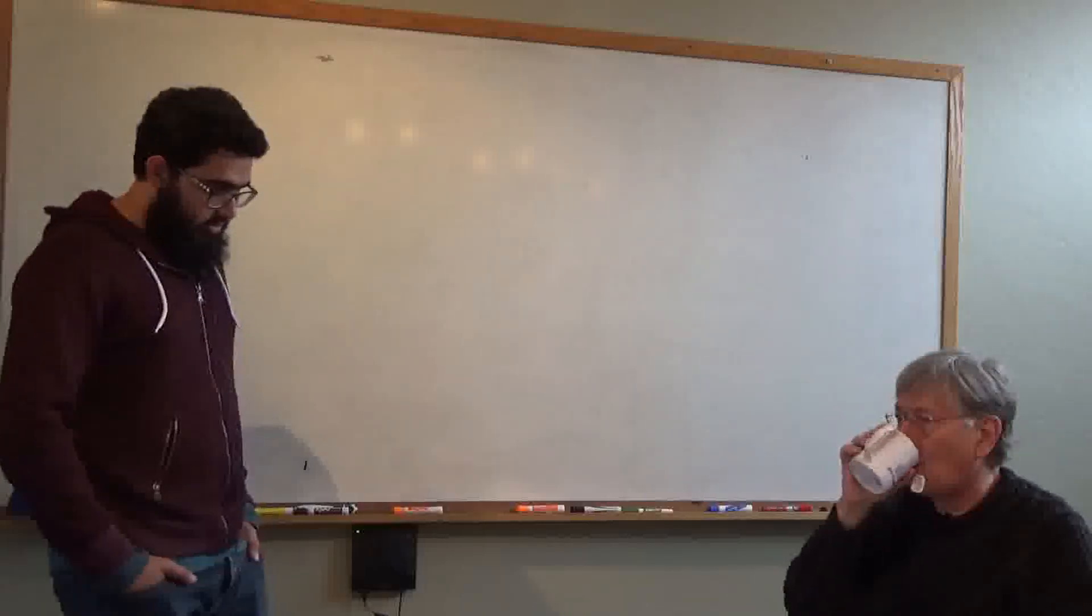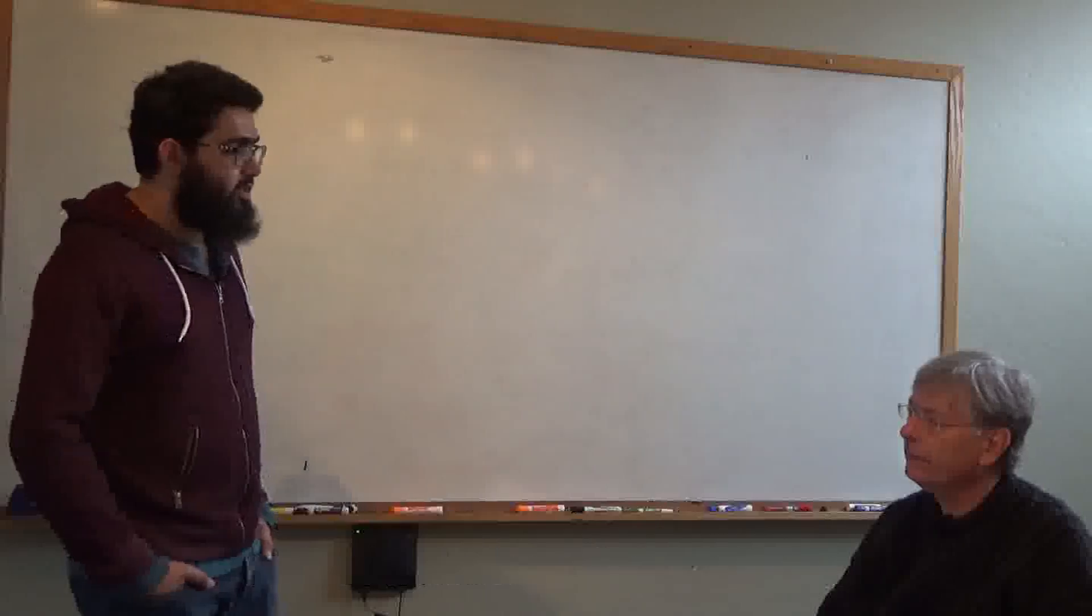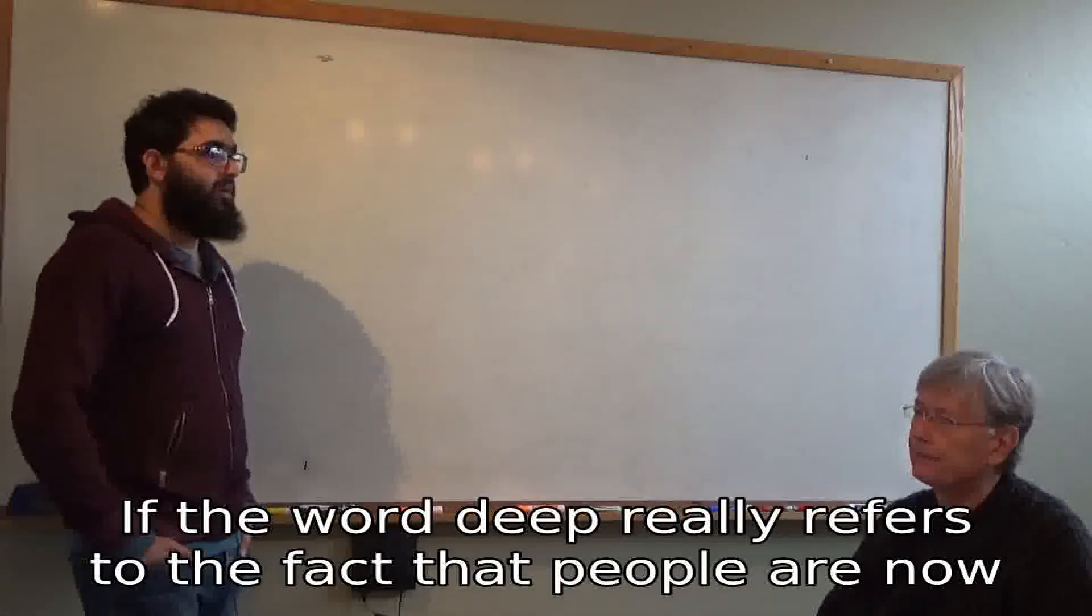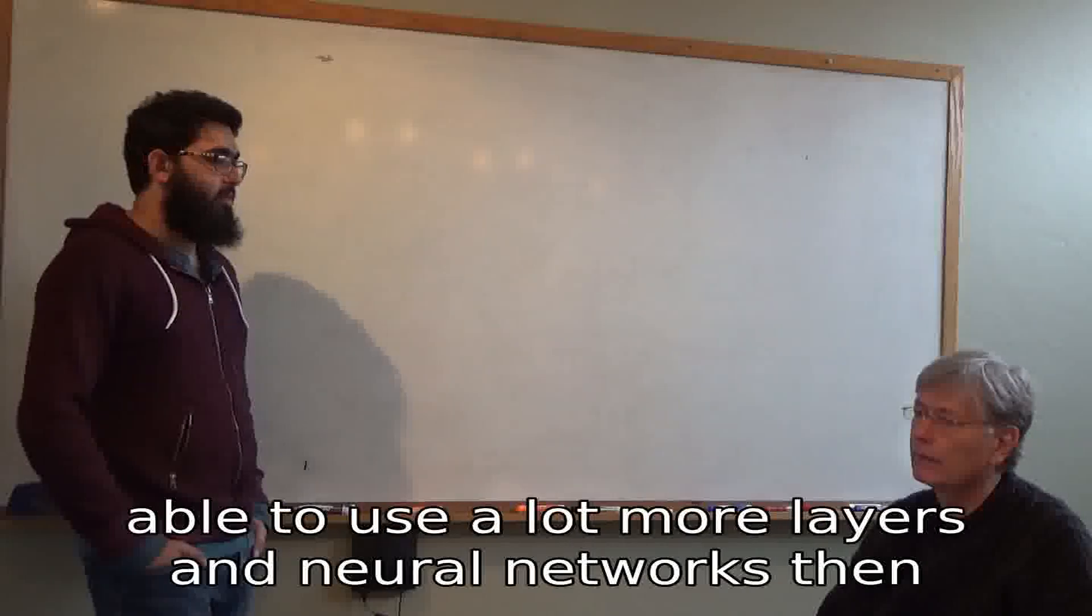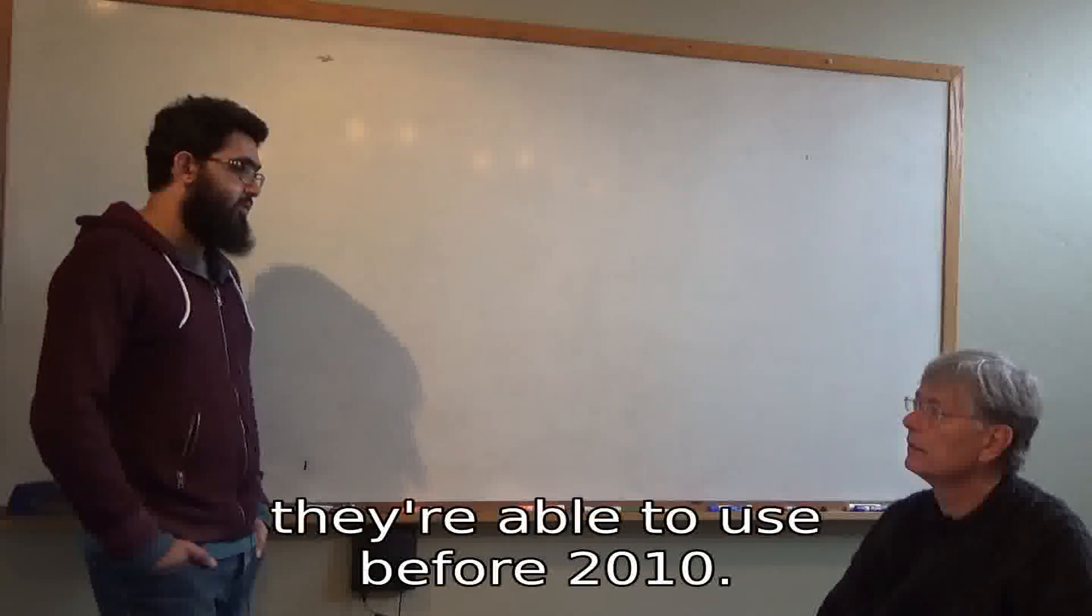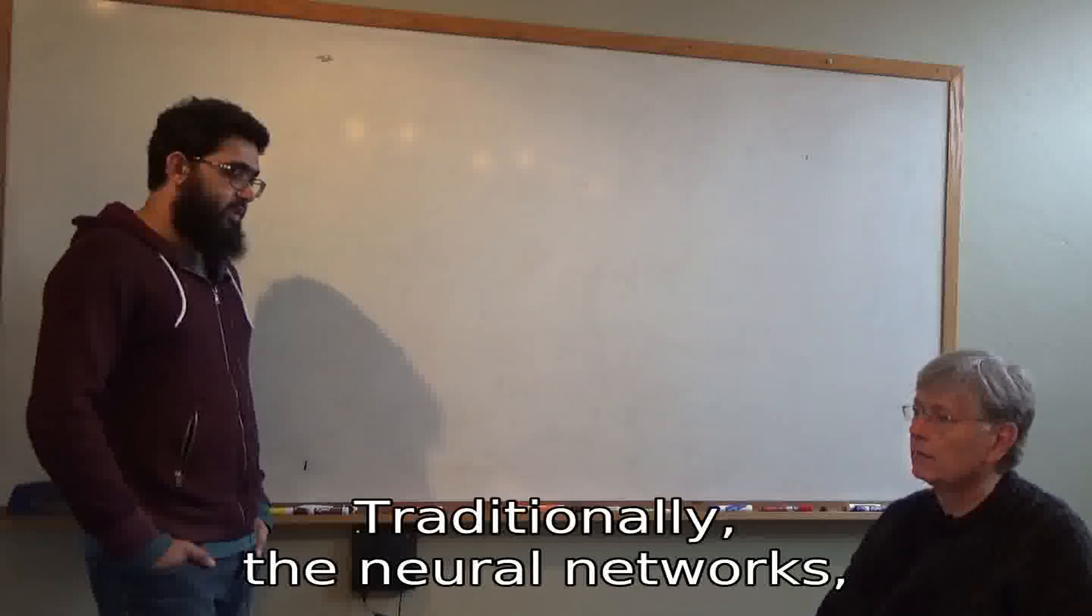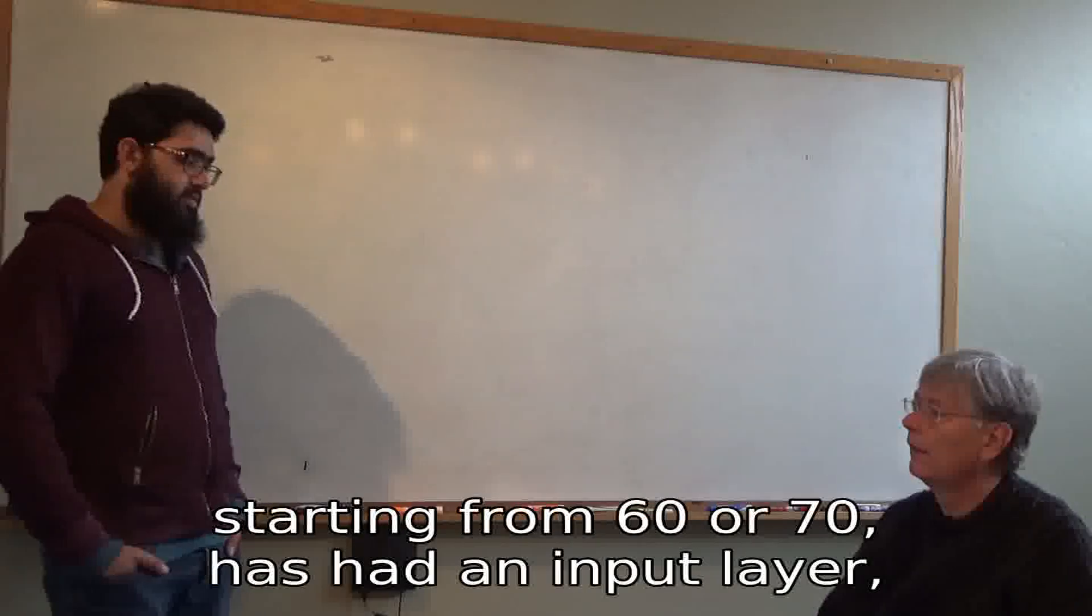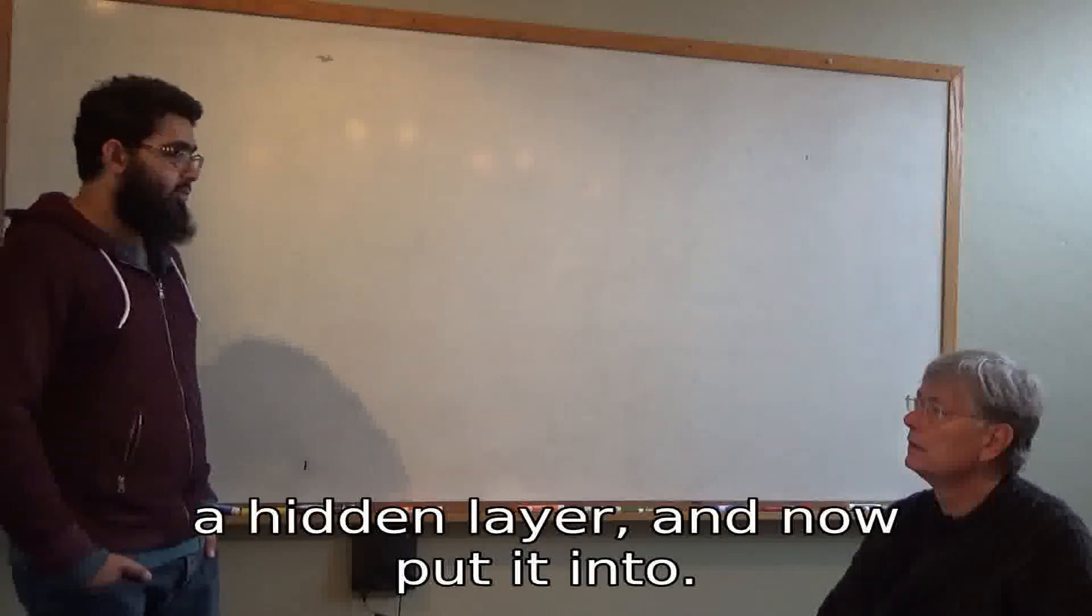Deep learning is an advanced form of machine learning. The word 'deep' really refers to the fact that people are now able to use a lot more layers in neural networks than they were able to use before 2010. Traditionally, neural networks starting from the 60s or 70s had an input layer, a hidden layer, and an output layer.